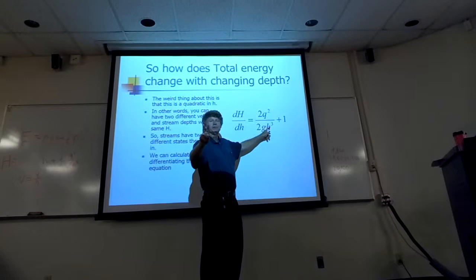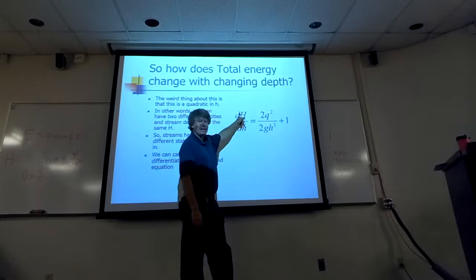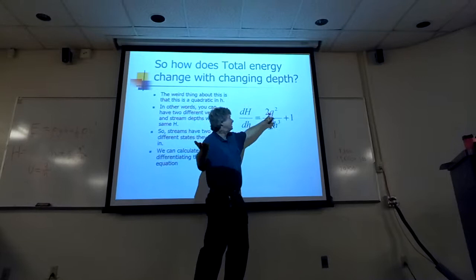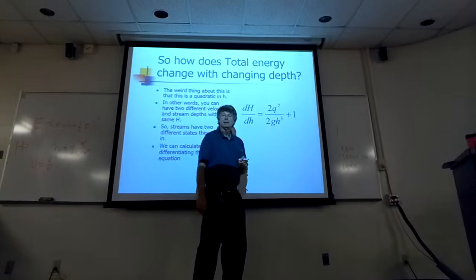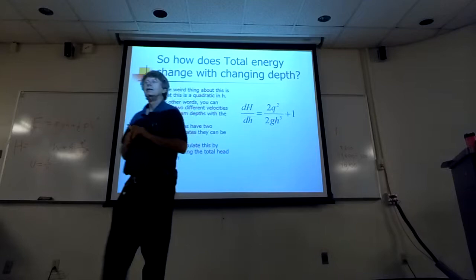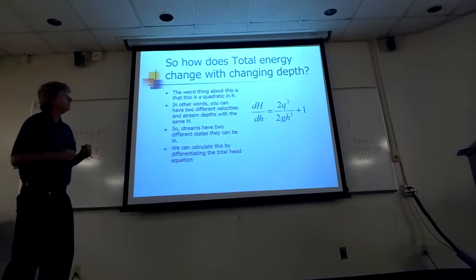And so, now, we end up with the change of energy as water depth in a stream changes is equal to, two, and the twos cancel, is equal to the velocity divided by the depth squared.